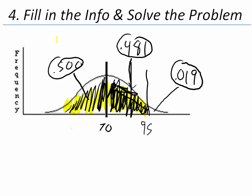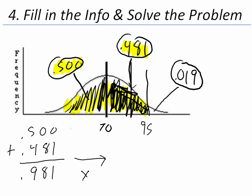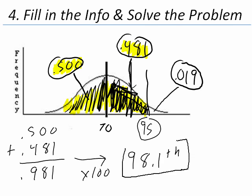And to solve that, we're going to add up .500 and .481. So we say .500 plus .481, that comes out to be .981. So .981 of the population is below a value of 95. We need to turn this into a percentile, so we need to turn it into a percentage. So multiply it by 100. That's 98.1. So someone who has a 95 on this particular exam was at the 98.1th percentile. And that's the solution to our question.